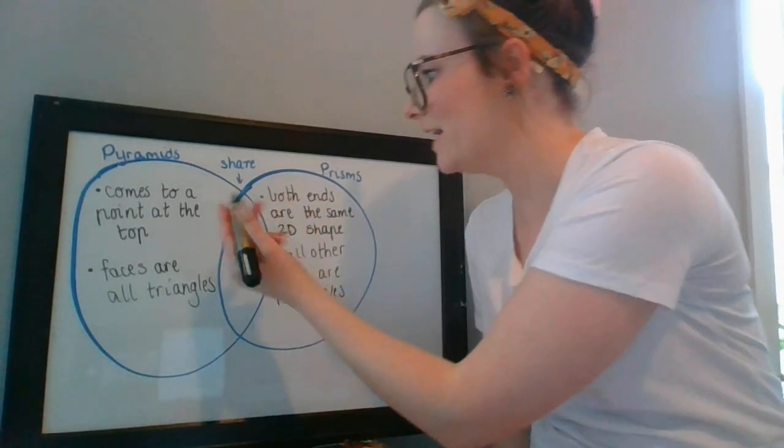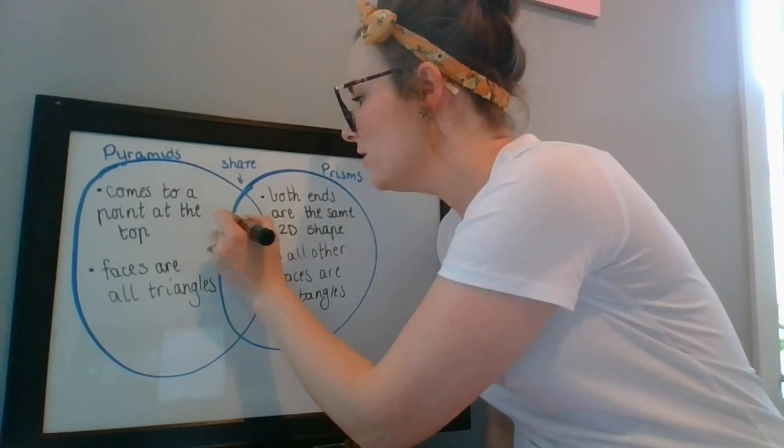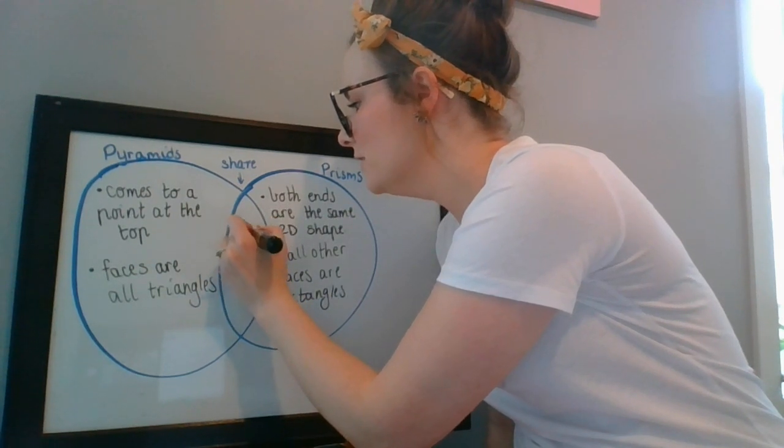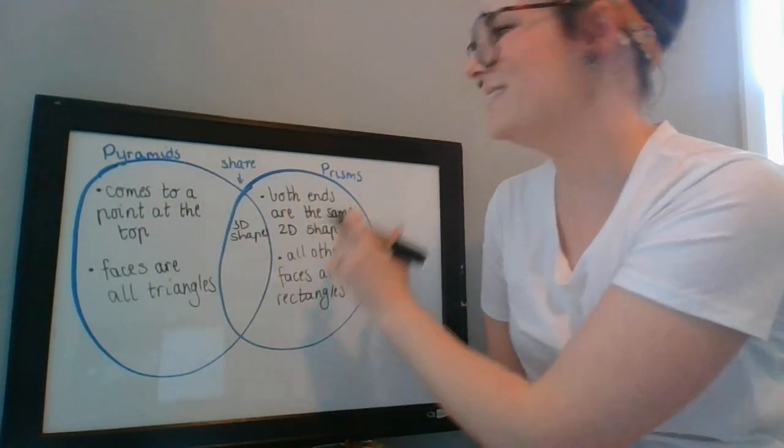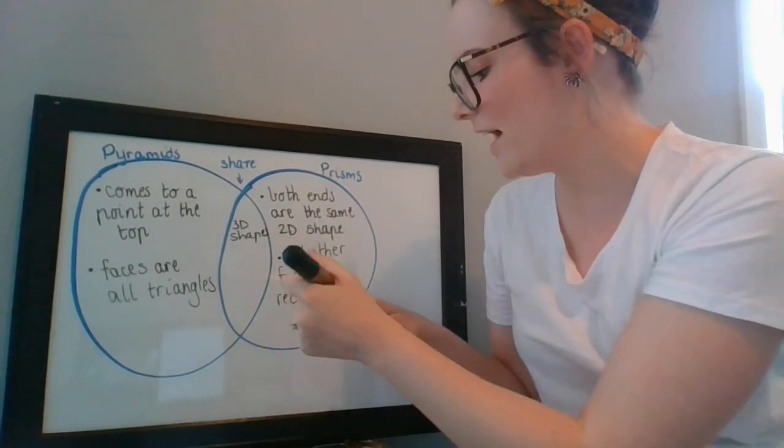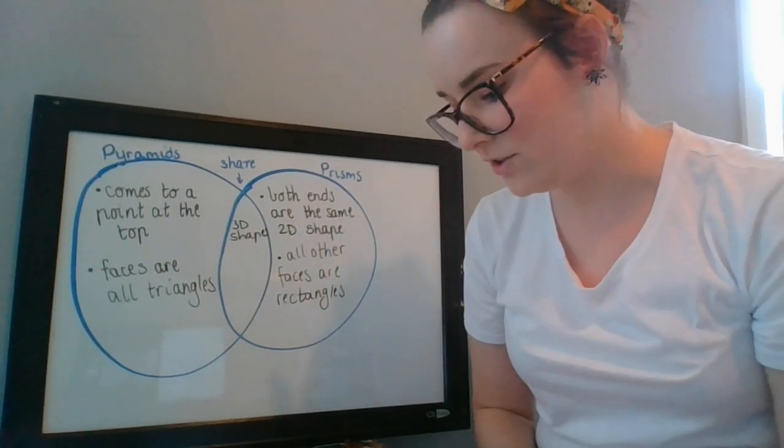So that's something that they share. So I can say that they're both 3D shapes in the middle. No point in popping that under the pyramids and the prisms because they share that information. So that's why it goes in the middle.